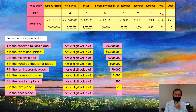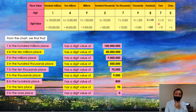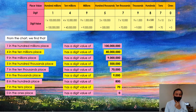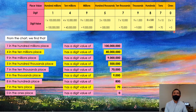7 in the tens place has a digit value of 70. And last, 0 in the ones place has a digit value of 0.